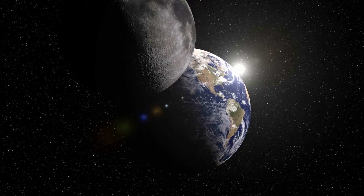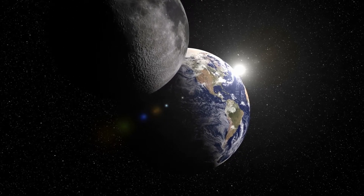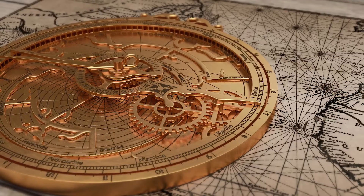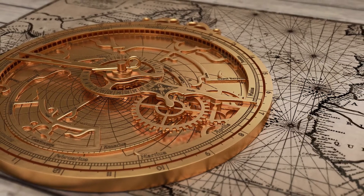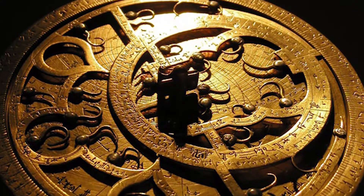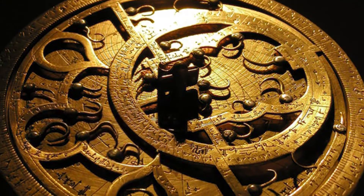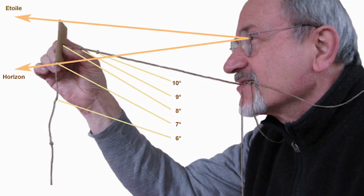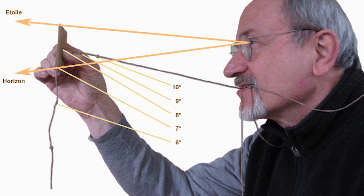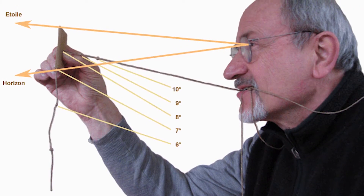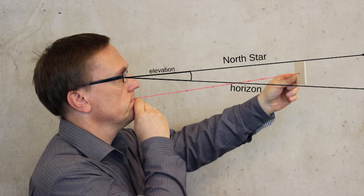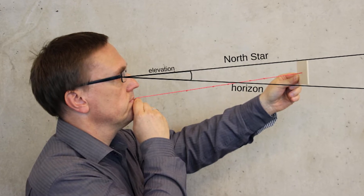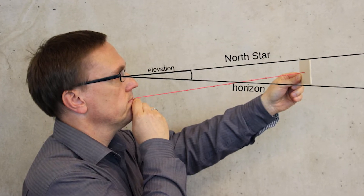It's actually fairly simple to determine your latitude using a small square piece of wood and a knotted string — a 9th and 10th century Arab invention. The concept is that as you get closer to the equator, Polaris will appear closer to the horizon, and as you get farther north, Polaris will appear higher up.